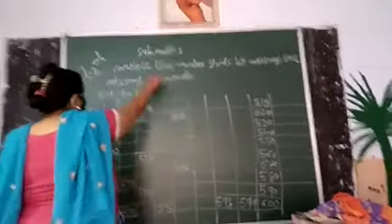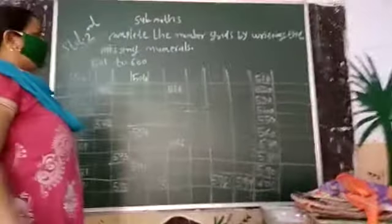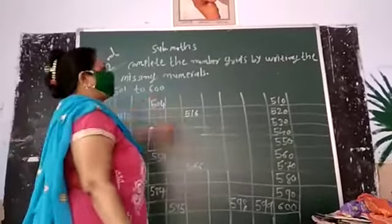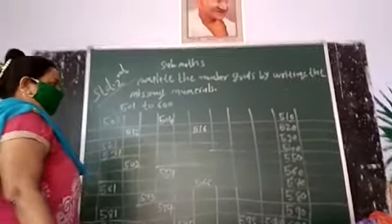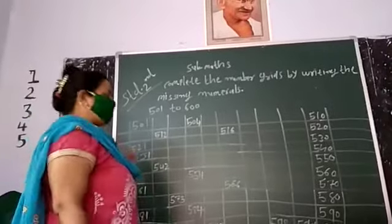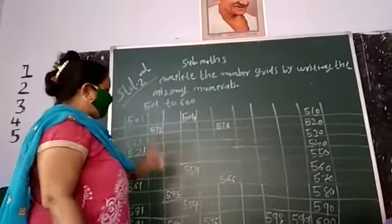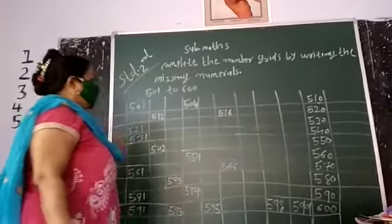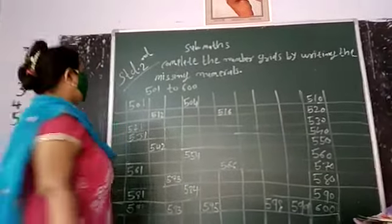We have missing number complete here. Once we complete the number of 500, I will complete the number. Today, we will complete the number of 500 and 600. We will complete the number of blackboard. We will complete the number of missing number.